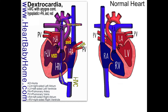We also have PAPVR — that's partial anomalous pulmonary vein return. Partial means it only happens on one side as opposed to both sides. Anomalous means not normal. Pulmonary veins are the veins coming back from the lungs. In a normal heart, the pulmonary veins both attach to the left atrium. But in our heart, the pulmonary veins on the right side attach to the right atria instead of the left atrium.